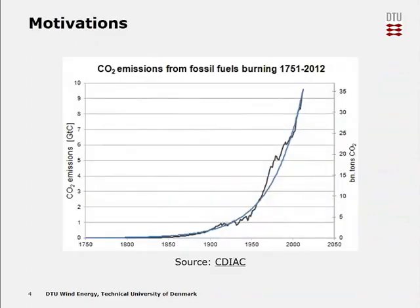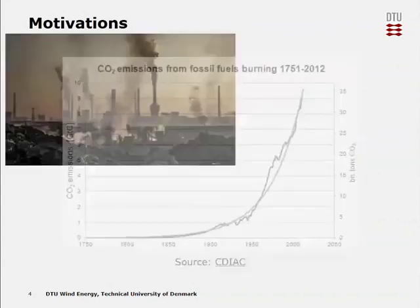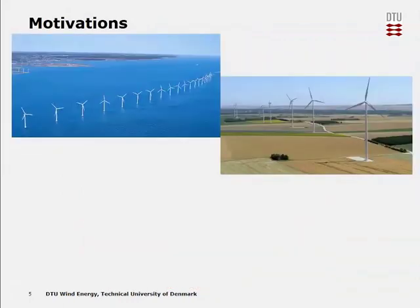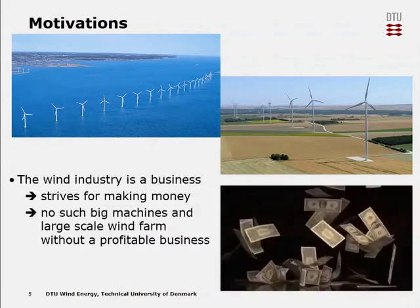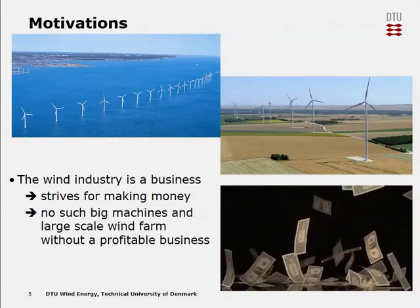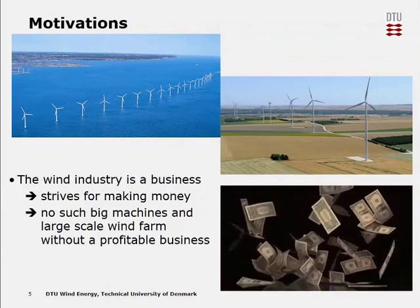For the motivations, this is the CO2 curve over the last two to three centuries. There is a human factor apparently happening around the year 1900, causing environmental issues. Instead, we prefer to have wind turbines and wind farms offshore and onshore. But it's not only an environmental question — the wind industry needs to make money so that we can achieve such big projects.